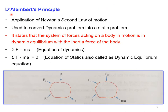Now we will see another important principle — D'Alembert's principle — which is an application of Newton's second law of motion. From Newton's second law we got F = m·a. D'Alembert's principle is used to convert a dynamics problem into a static problem. According to D'Alembert's principle, the system of forces acting on a body in motion is in dynamic equilibrium with the inertia force of the body.